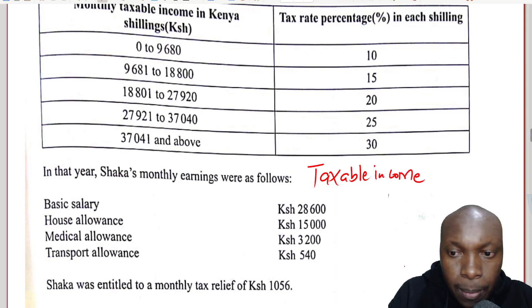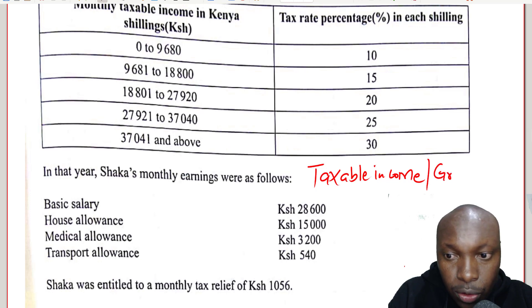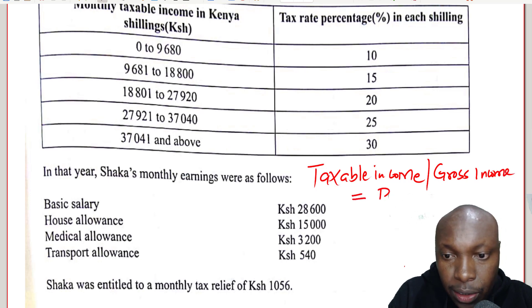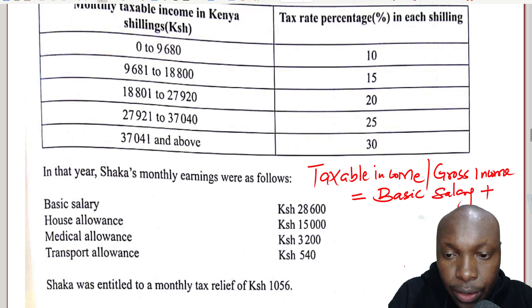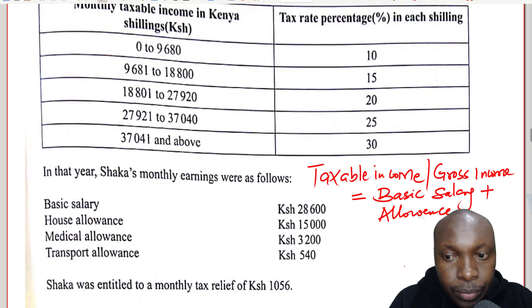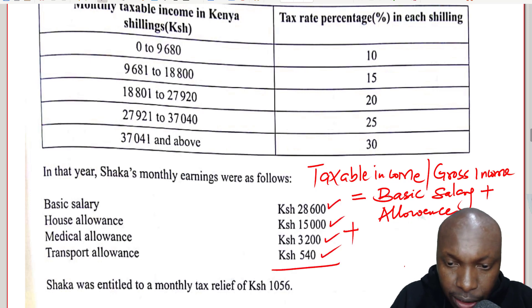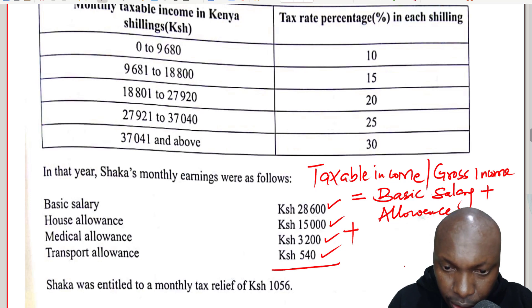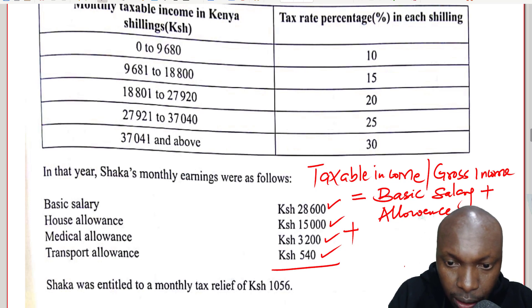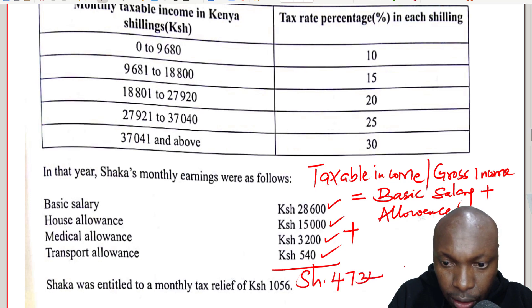How do you get the taxable income? Taxable income is referred to as the gross income, and it is obtained by taking the basic salary and adding all the taxable allowances. So: $28,600 plus $15,000, plus $3,200, plus $540, and that gives $47,340.